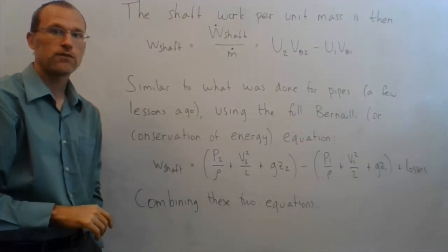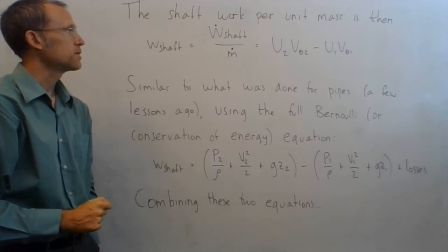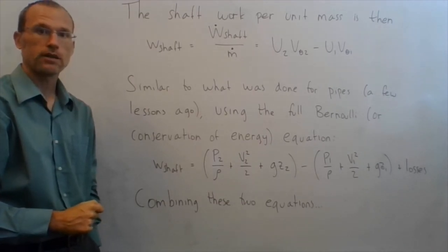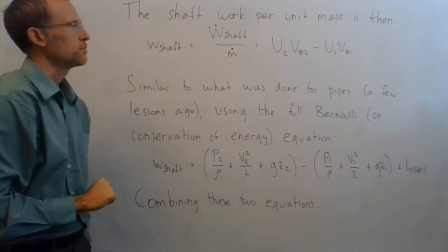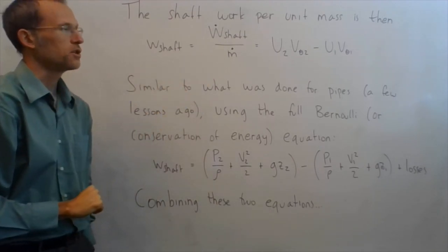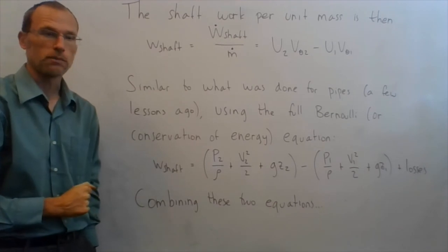You can also find the shaft work per unit mass, so that's simply taking the shaft power, W dot, and dividing it by the mass flow rate, m dot, so that gives me the work, shaft work, simply u2 V theta 2 minus u1 V theta 1, so that's my work unit mass.